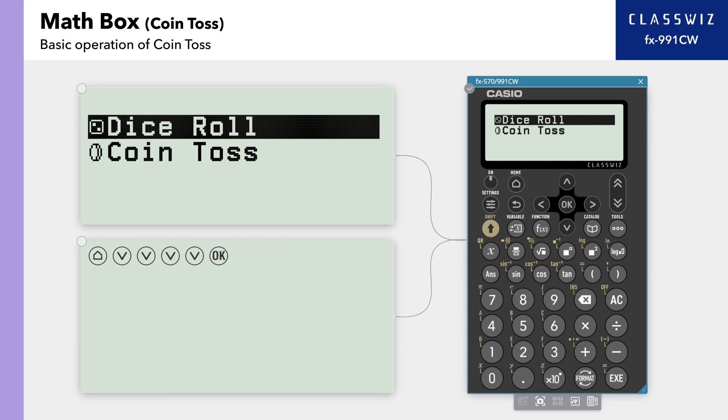You will see Dice Roll and Coin Toss on the screen. Select Coin Toss.